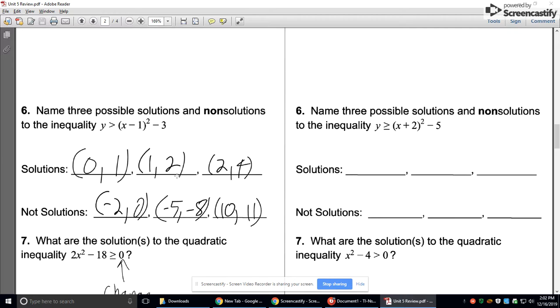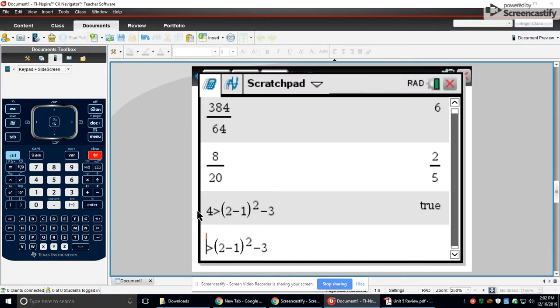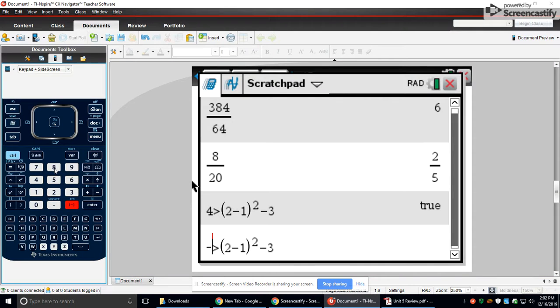So anything I plug in that's a solution should make a true statement. Anything I plug in that's not a solution should make a false statement. So let's do negative 5, negative 8. So I'll replace y with negative 8.